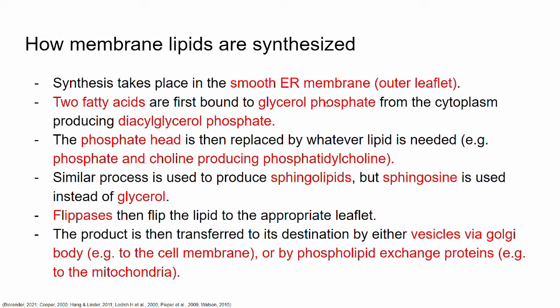The next step involves the phosphate head. In diacylglycerol phosphate, the phosphate group serves as the head of the molecule. This phosphate head is then replaced by whatever lipid is needed by the cell. For example, if the cell membrane needs phosphatidylcholine, then the phosphate is replaced by another phosphate and choline.